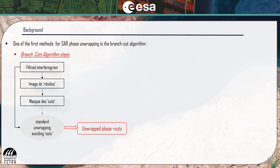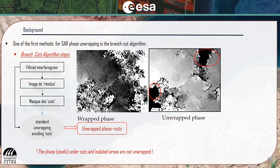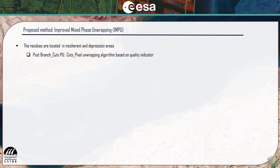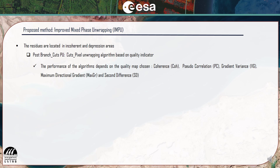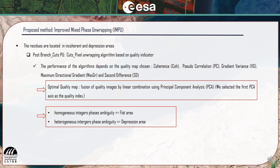This processing prevents error propagation. However, pixels under cuts and isolated areas are still unwrapped. Since the residues are mostly located on incoherent areas, post-branch-cut unwrapping guided by quality algorithms were developed. The performance of these methods depends on the quality image chosen. So, in this work, for our proposed method, we generated an optimal quality map using principal component analysis.